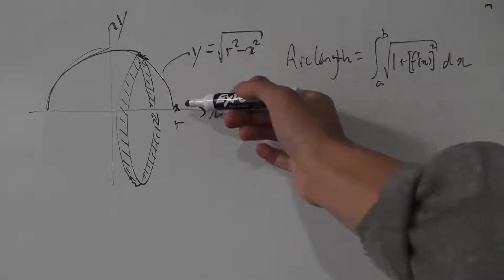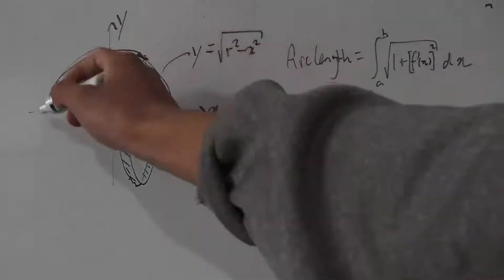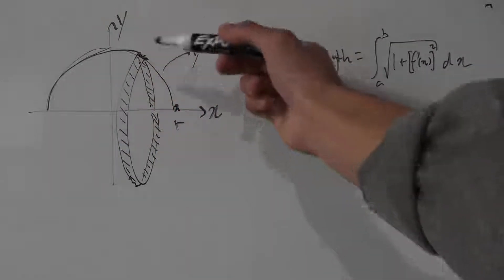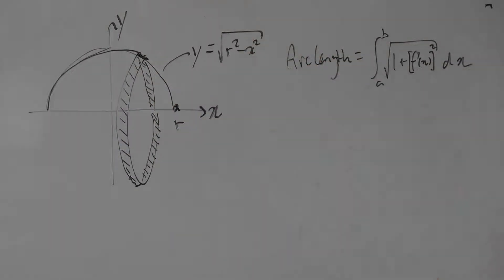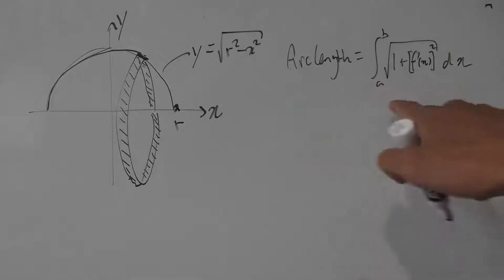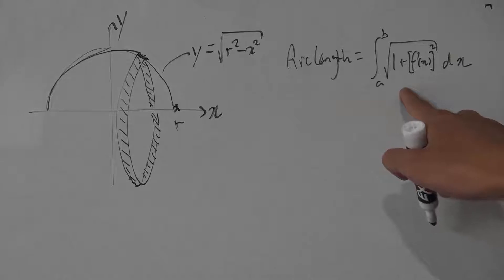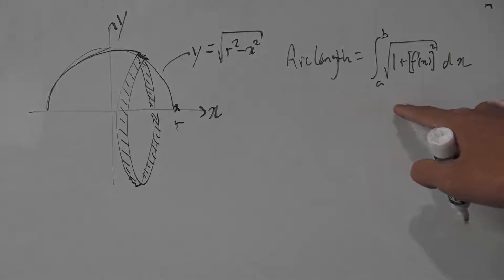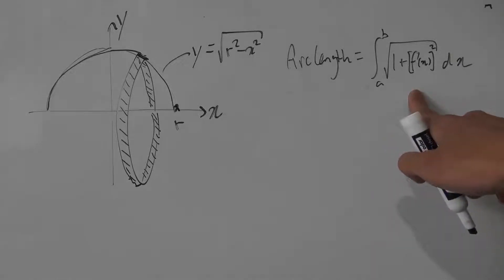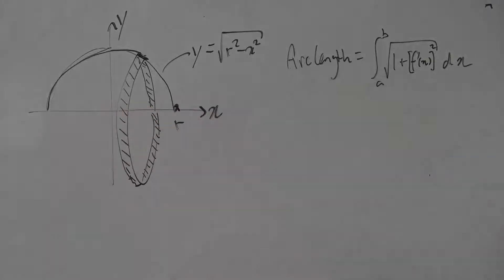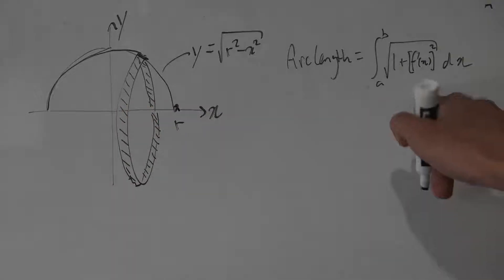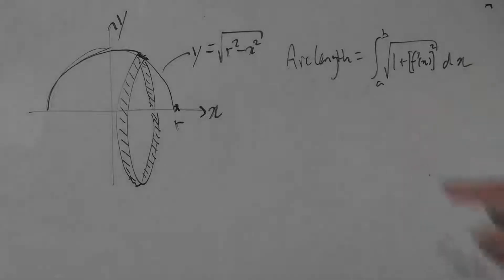The idea is to revolve this whole length here around the x-axis so we can get the surface of a sphere out of it. To find this we actually need the arc length formula, which I've written up here. This is the formula used to find the arc length of any function on any continuous interval, and I derived this in a previous video.